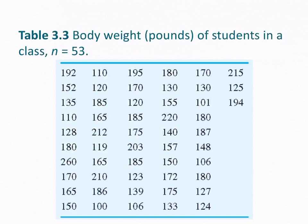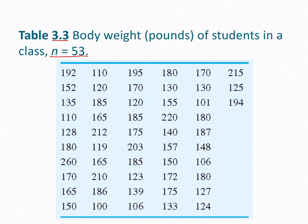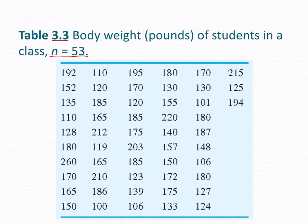So here's an example from the book in Table 3.3. It has to do with body weight in pounds of students in a class of a size of 53, n equals 53. So as you can see, this would be more accurate to what data would look like if you actually got it. It's not in order. It's organized by columns and rows here. But as you can see, it's not from low to high. We want to look at the stats. So you can see it's ranged from 100 to 260 pounds. Axis multiplier of 100. Only two stem values of 100 and 200. It's too broad, right? If we only have 1 and 200, it's going to be too squished in the value size.